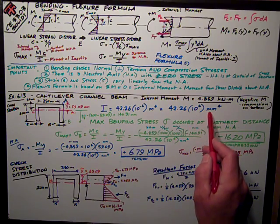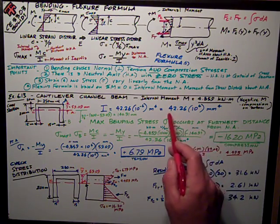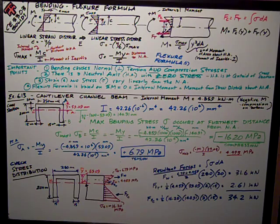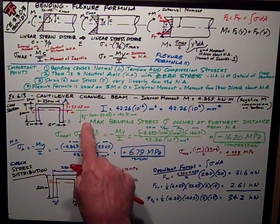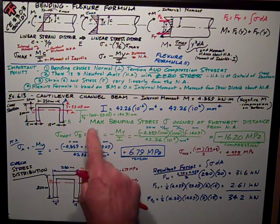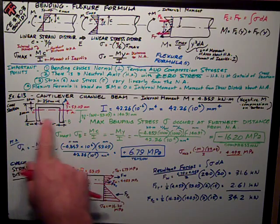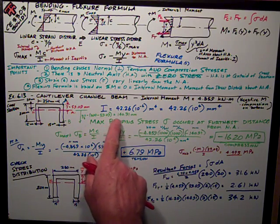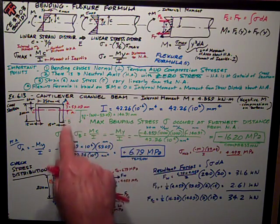As you know, I prefer things in millimeters. So, that's what it is in millimeters to the fourth. It's going to be handy to know what that distance from the neutral axis down to the bottom, and that's just the height, 200 minus 59.09, 140.91 millimeters.